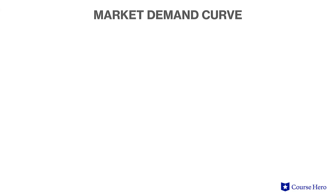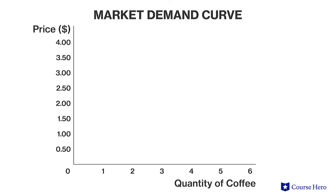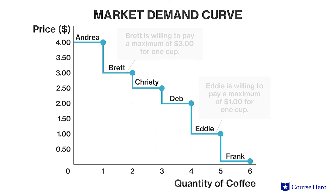Let's look at our market for coffee again. A demand schedule can be used to create a demand curve for this market. Each customer's willingness to pay corresponds to a spot on the market demand curve. Note that the demand curve is downward sloping, indicating that as the price of a cup of coffee goes down, the quantity of coffee demanded increases.